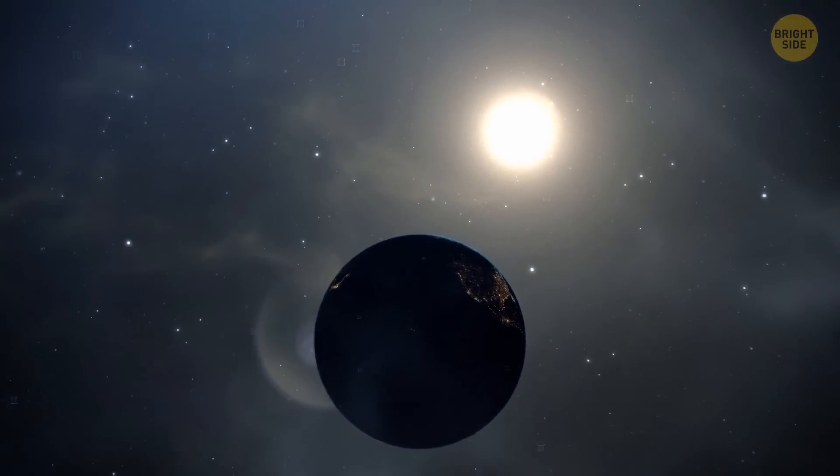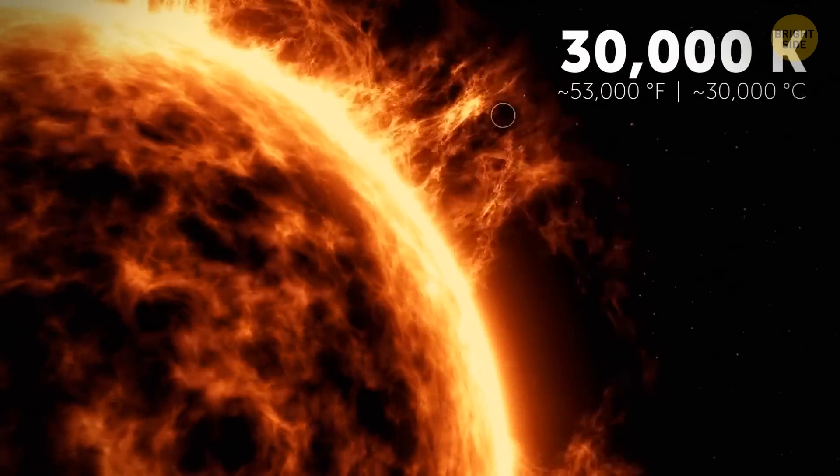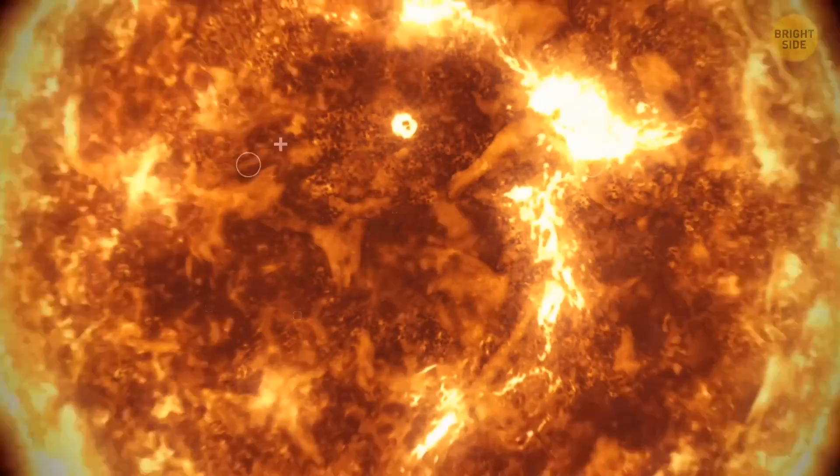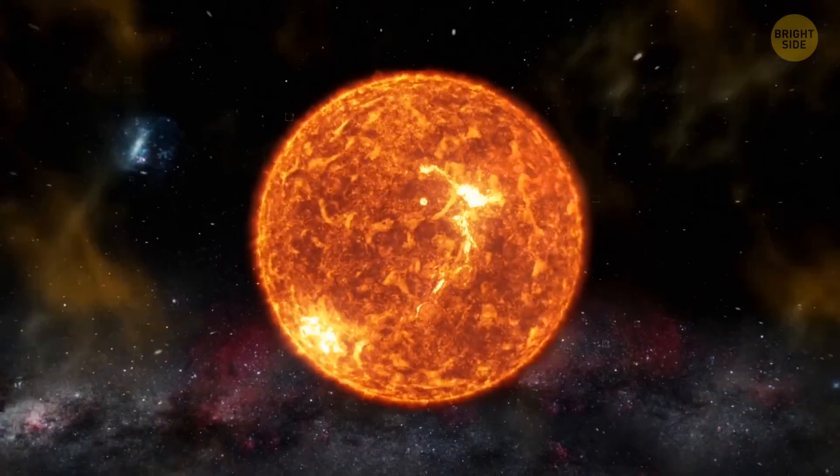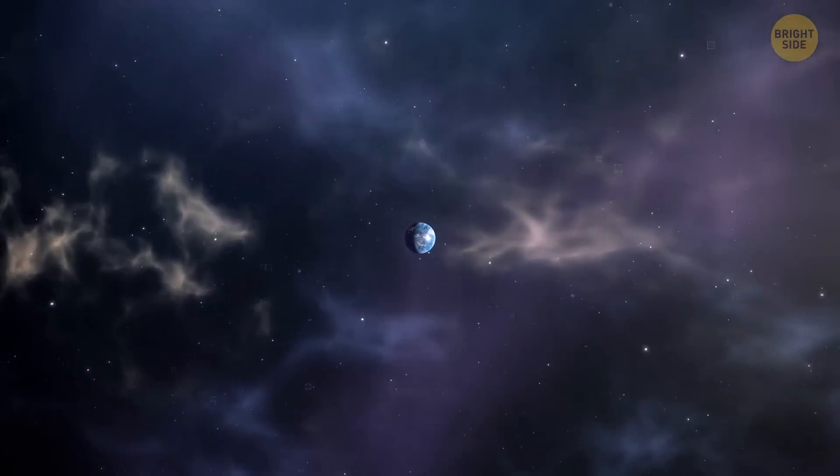If the universe heats up, our sun might too. If its temperature hits 30,000 degrees Kelvin, it could become hot enough to ionize all those materials it had previously ejected. And it could create a real planetary nebula.